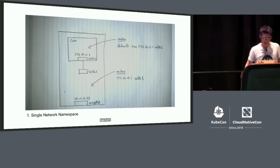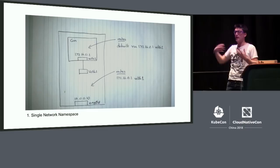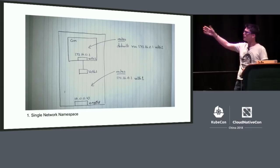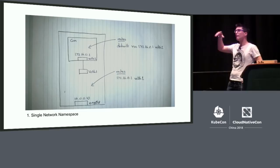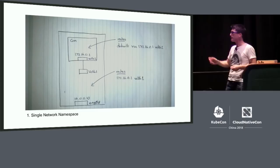This is the simple case. The big rectangle on the outside represents the node — that could be a bare-metal machine or a VM. It has an interface, here called EMP0S8 but treated as E0, with IP address 10.0.0.10. The little box in the middle labeled CON represents the container. A container in Linux is a process with a bunch of Linux mechanisms to isolate it — including cgroups, namespaces, and various security things.